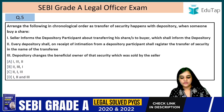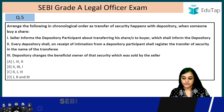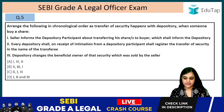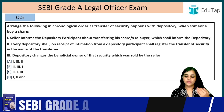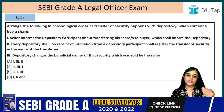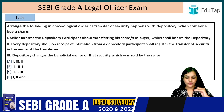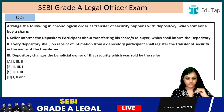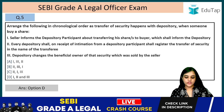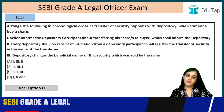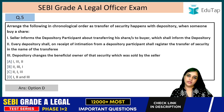Question 5: Arrange the following in chronological order as transfer of security happens with a depository when someone buys a share. First, the seller informs the depository participant upon transferring his shares to the buyer, who shall then inform the depository. Second, the depository, on receipt of the intimation from the depository participant, registers the transfer of the security in the name of the transferee. Third, the depository changes the beneficial owner of the security that was sold by the seller. The correct order is 1, 2, 3 — option D is correct.